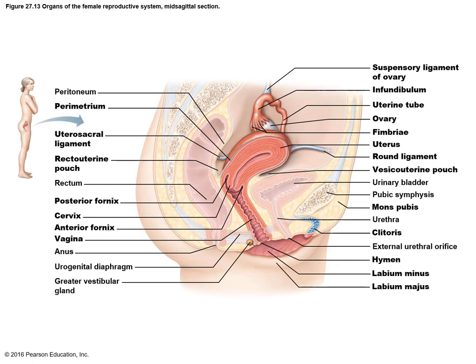The round ligament moves through the inguinal canal and connects to the external genitalia. On the posterior side, the uterosacral ligament connects the uterus to the sacrum.